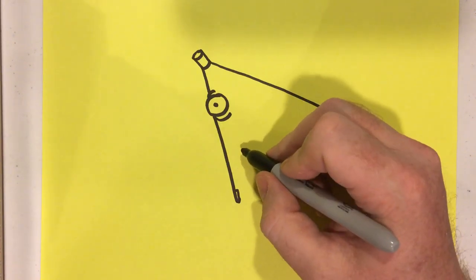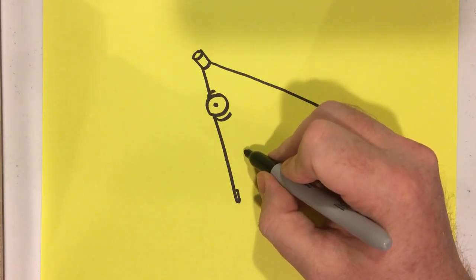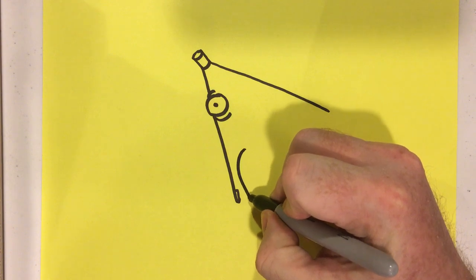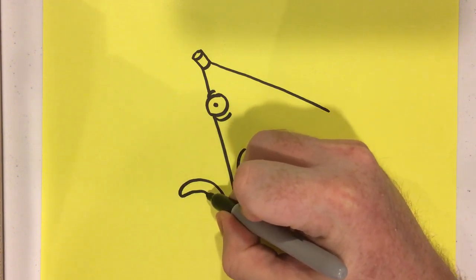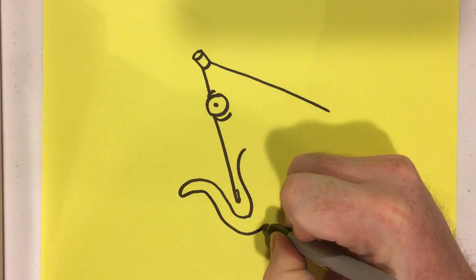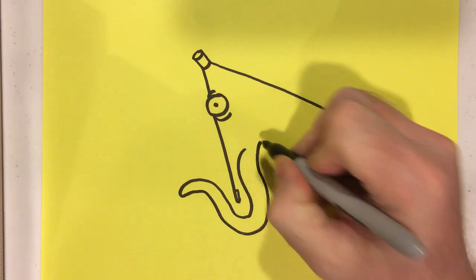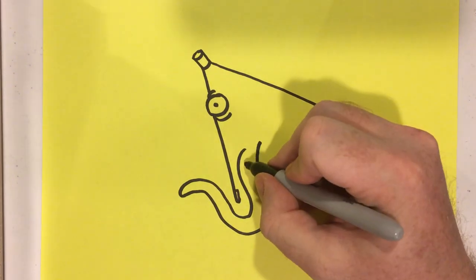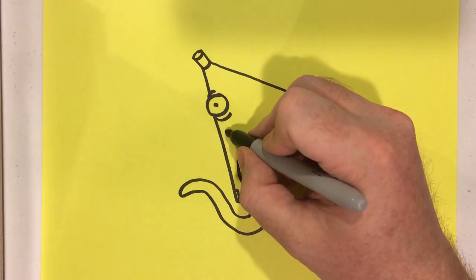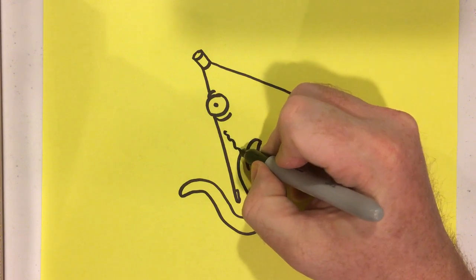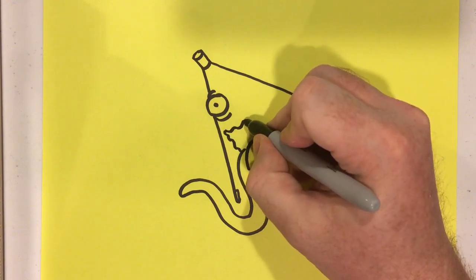Now we're going to draw a tongue. So we're going to draw a big, long tongue. Like that. And then its mouth. So it has this kind of jagged mouth.